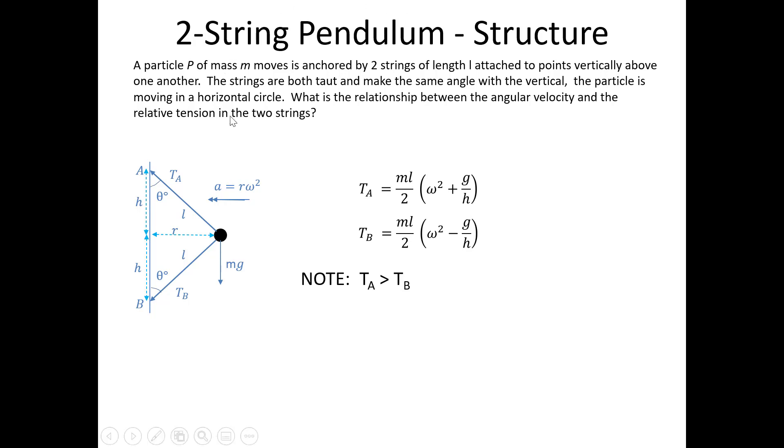Notice also that because we've been told the strings are both taut, both those tensions are greater than zero. If both those tensions are greater than zero, TB, the one with the minus sign inside the bracket, must be greater than zero. Therefore, omega squared minus g over h is greater than zero, so omega squared has to be greater than g over h. I now have found a minimum value for omega to keep the strings taut.